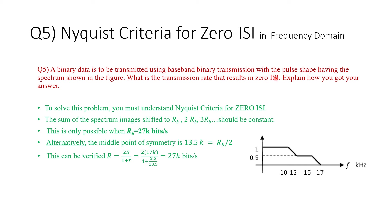Now I'm going to show you the answer. The answer to this question is based on Nyquist criteria for zero ISI. The only possible shift that will allow the signal to result in zero ISI is to shift the spectrum, and the new shift should be to the following value, which is 27 kilobits per second. So that's the proper shift.